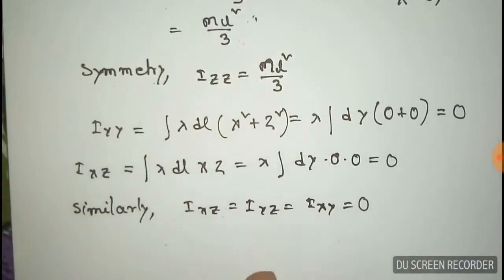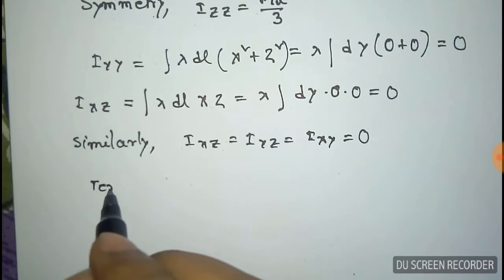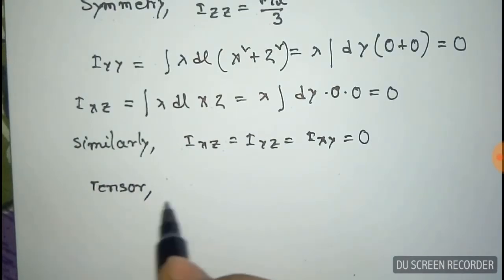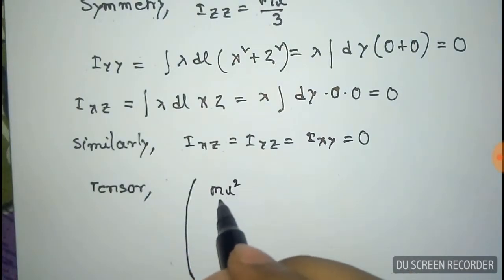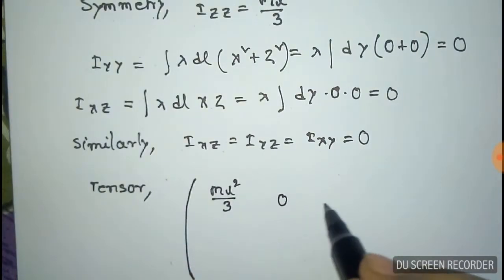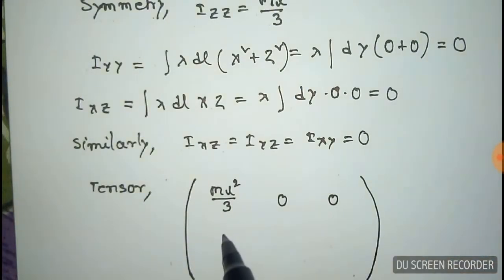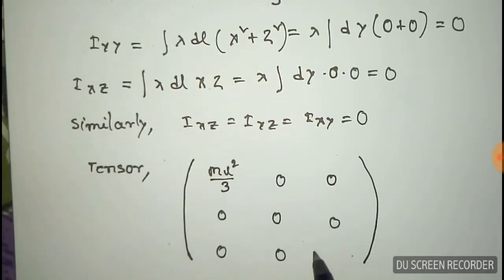So the moment of inertia tensor of the rod with origin taken at one end is a diagonal matrix with m L square by 3 on the x and z diagonal elements, and 0 on the y element. Thus we can calculate the moment of inertia of a rod.